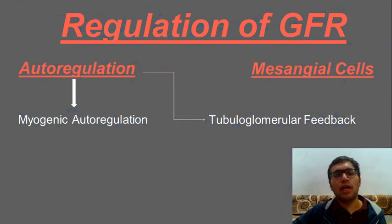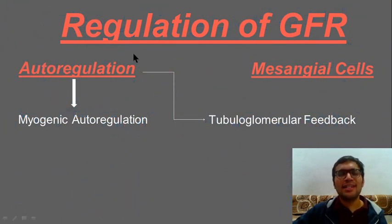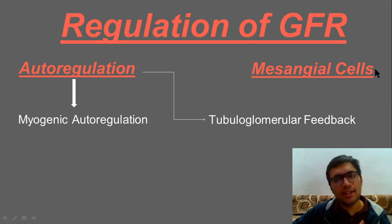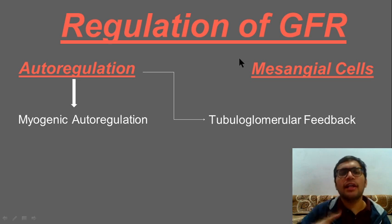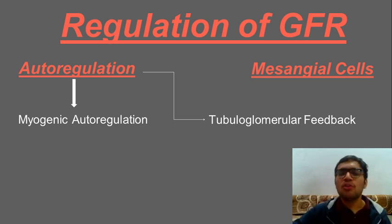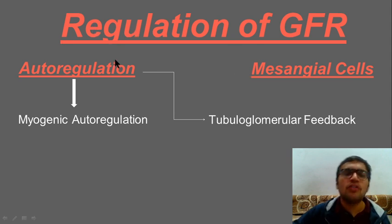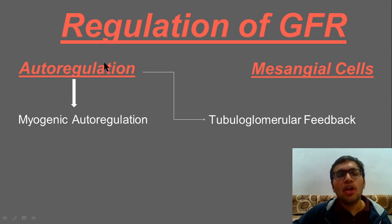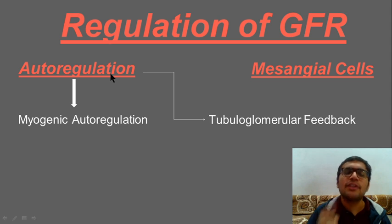In the regulation of GFR there are basically two kinds of regulation. One is regulated by your mesangial cells — that I have already told you in the previous video regarding nitric oxide, endothelin, and all those factors. The second type of regulation of GFR is via autoregulation, which consists of two components: myogenic autoregulation and tubuloglomerular feedback.